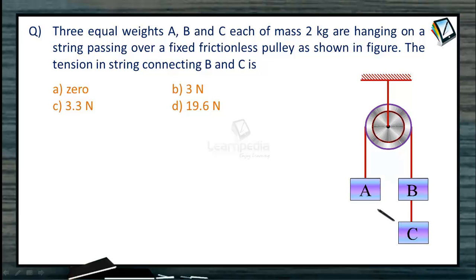Question: 3 equal weights A, B, and C, each of mass 2 kg are hanging on a string passing over a fixed frictionless pulley as shown in the figure.